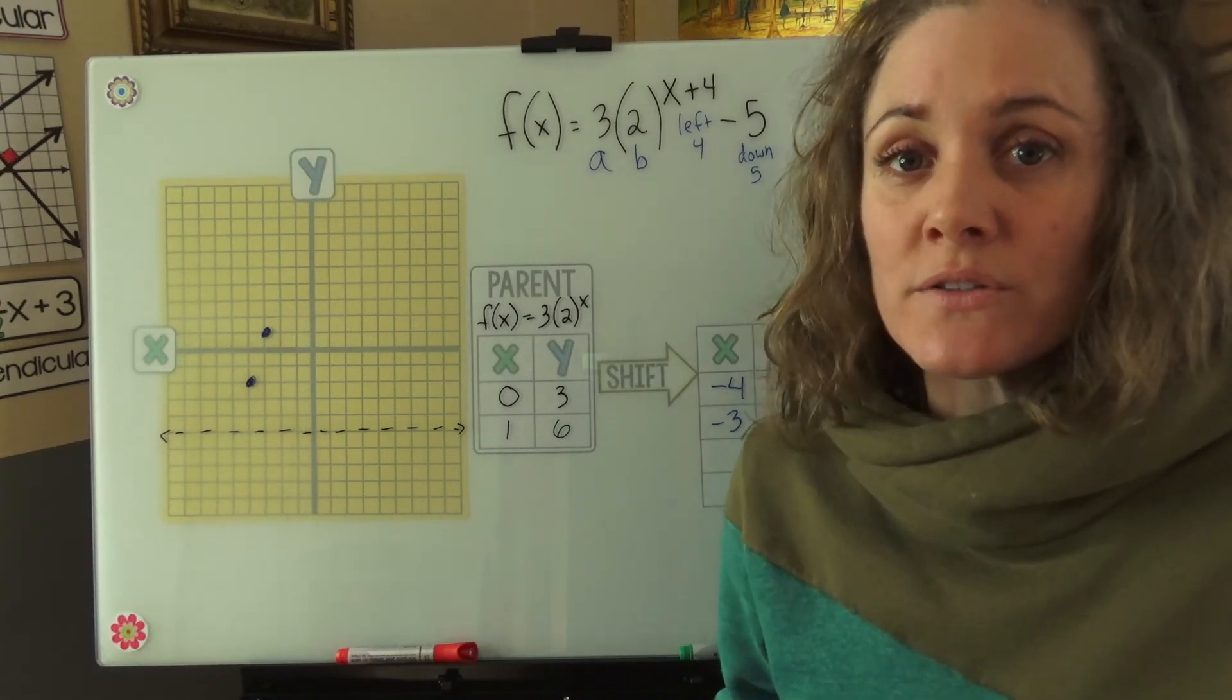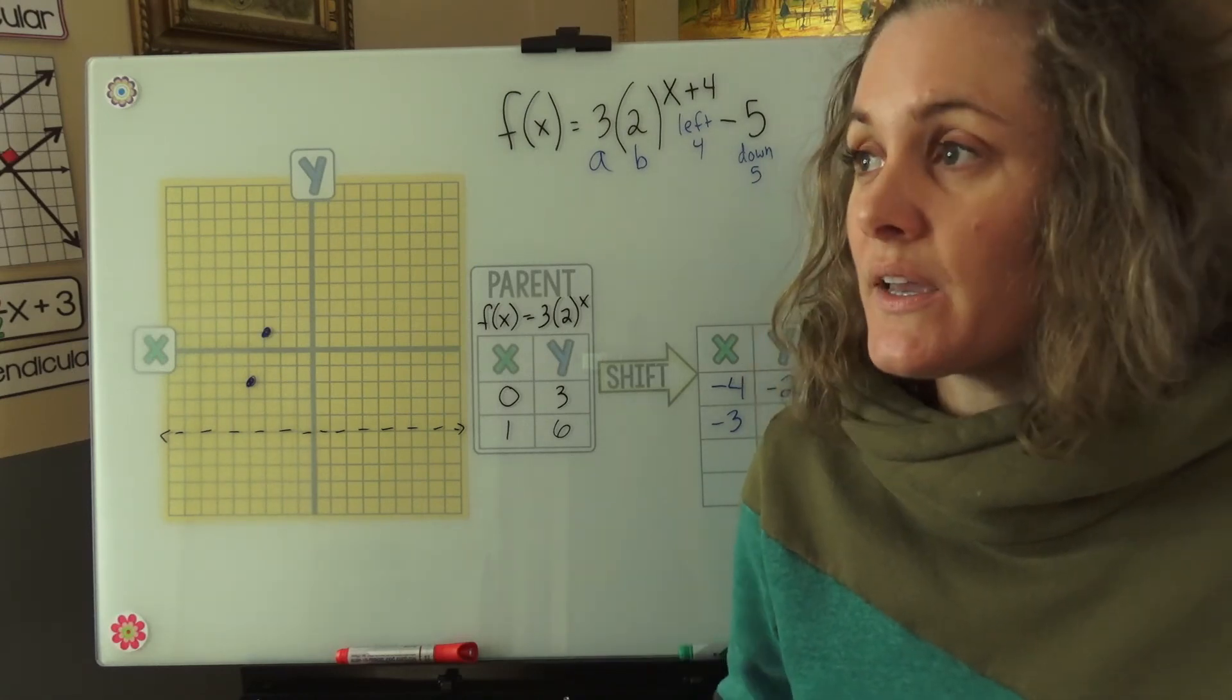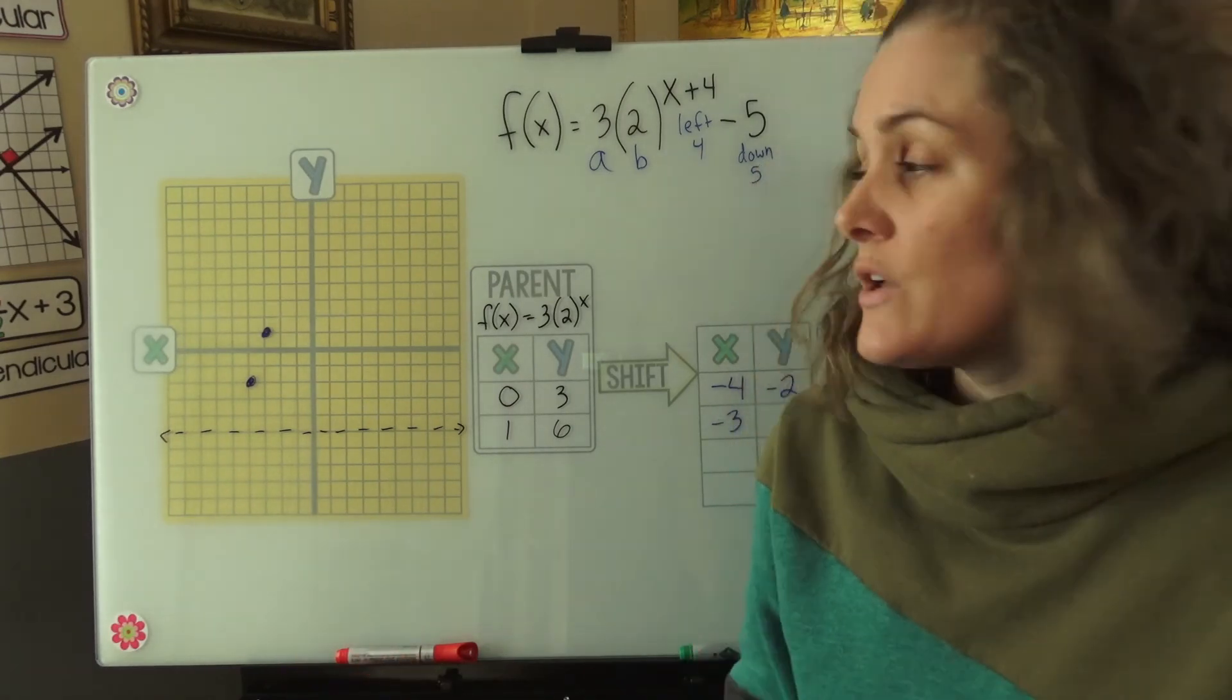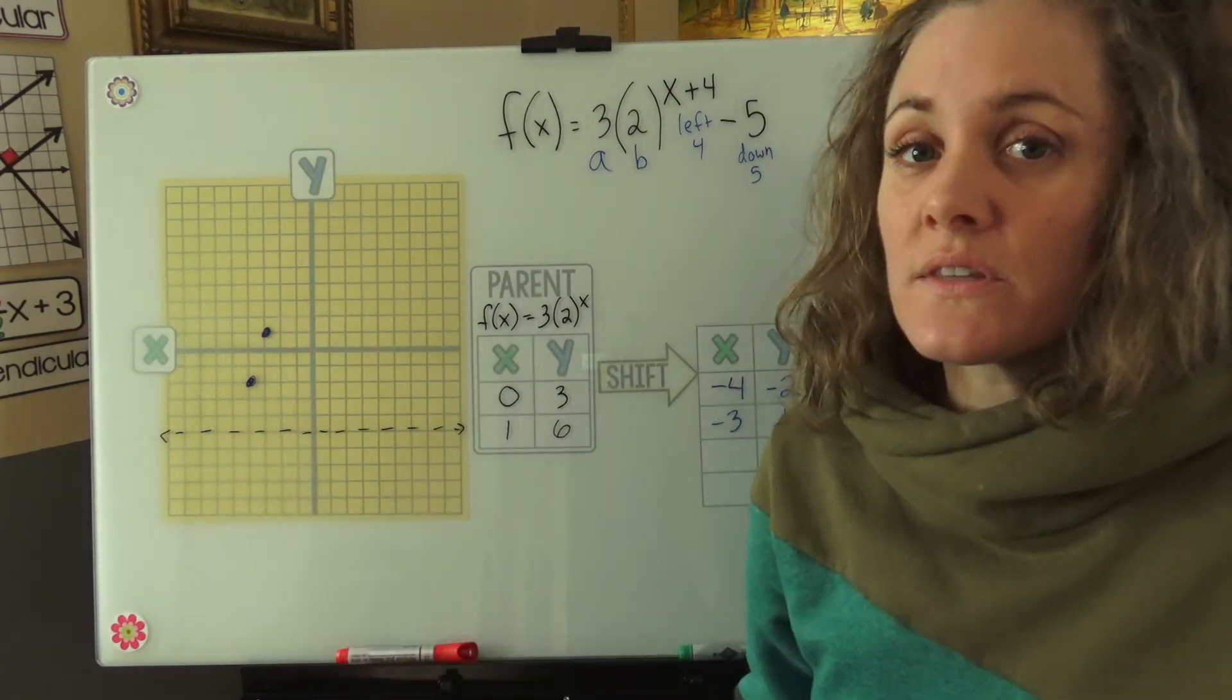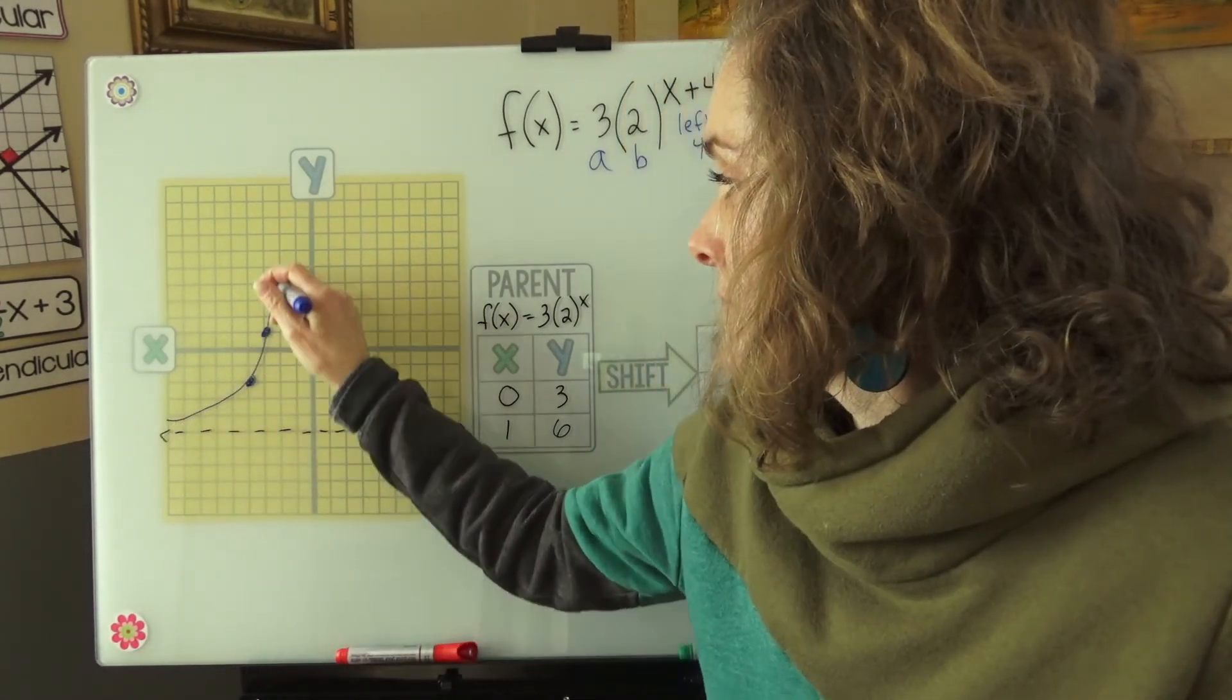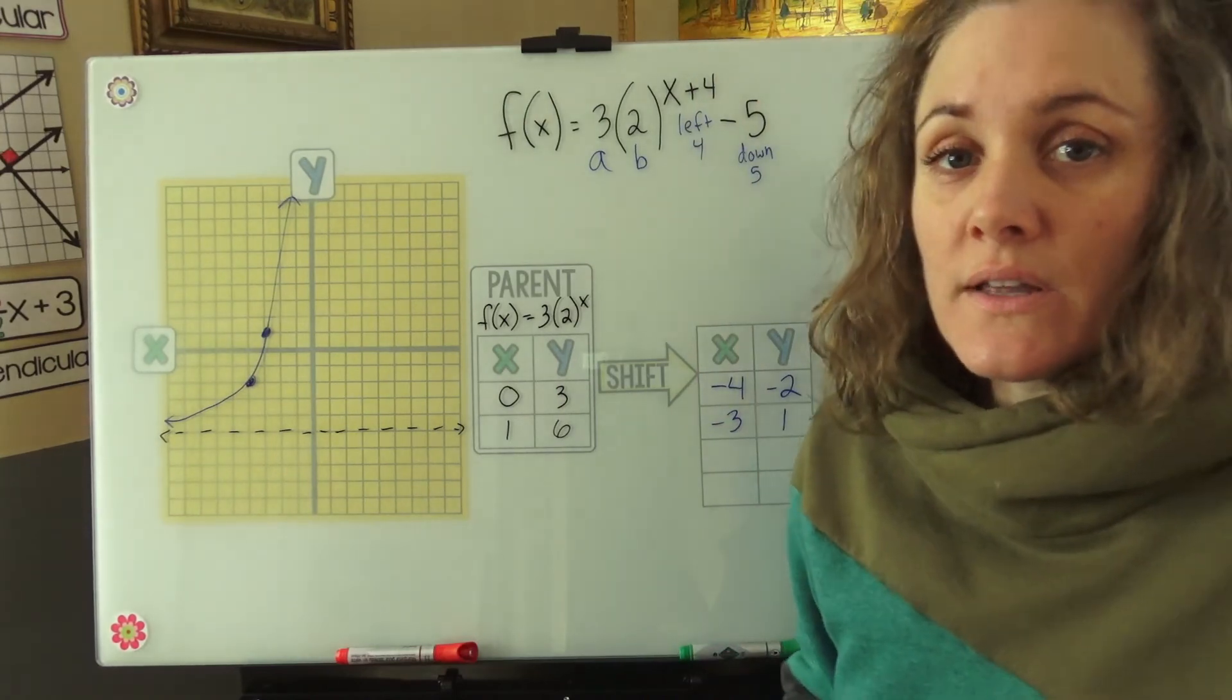Which is really neat because if you think about, say, if you took a Tylenol when you were a kid, some of that Tylenol is technically still in your body. So let's connect these points and just think about the shape of our exponential graph. And there it is.